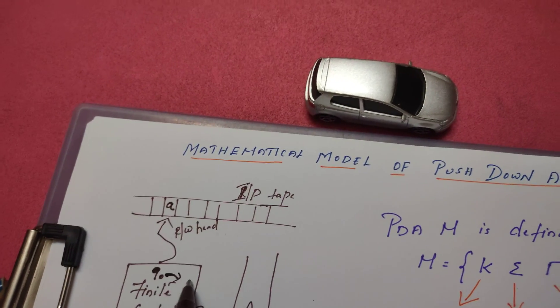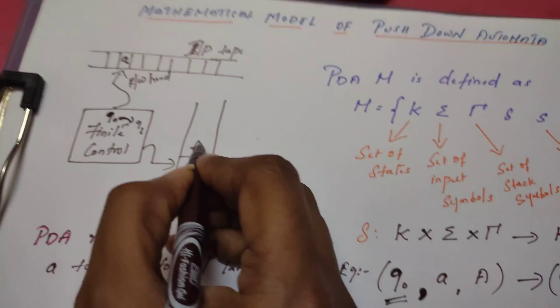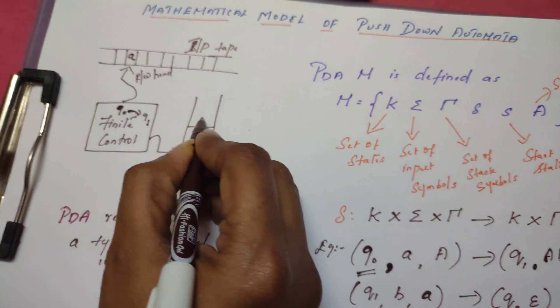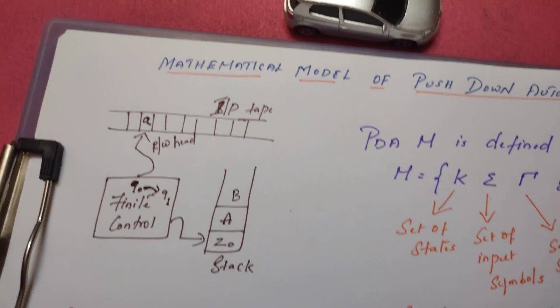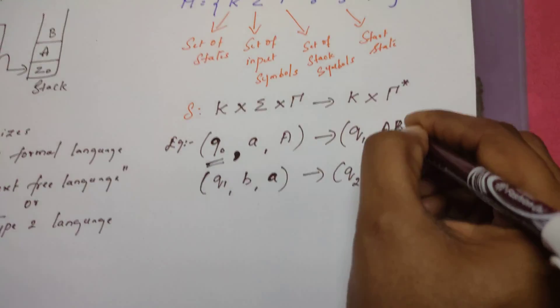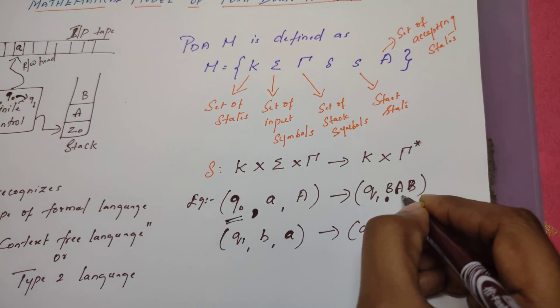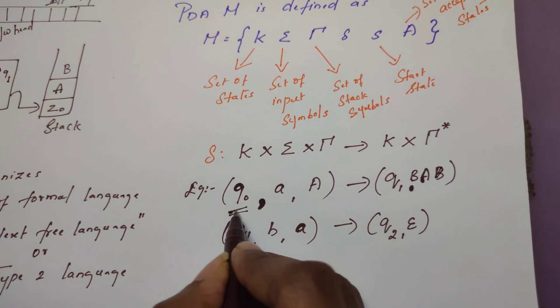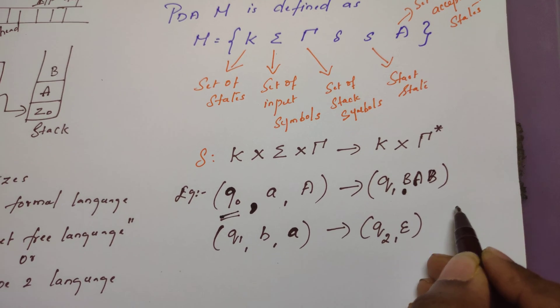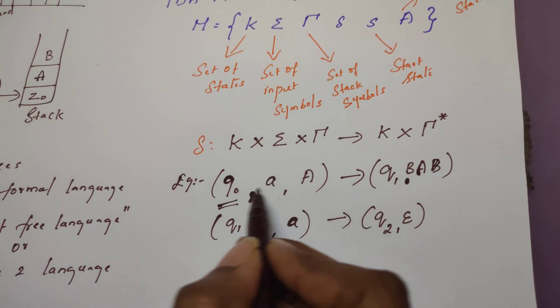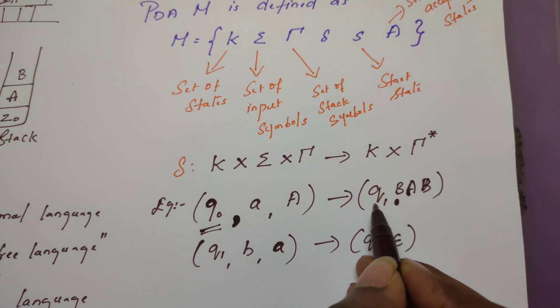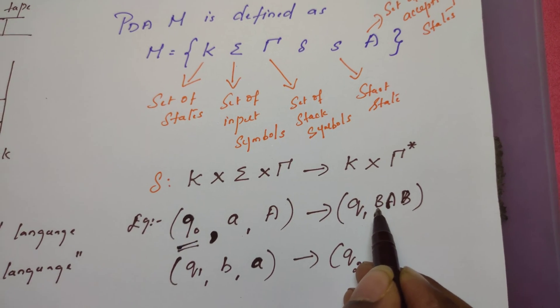The state of PDA is changed to Q1, and above this A, a B is pushed onto the stack. Already the top of the stack is A; above that A, B is pushed onto the stack. That is what this transition example says: from state Q0, on reading A when the top of the stack is A, the state is changed to Q1 by pushing B onto the top of the stack.